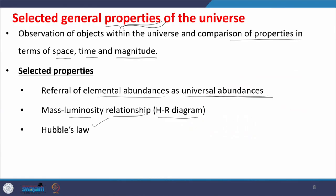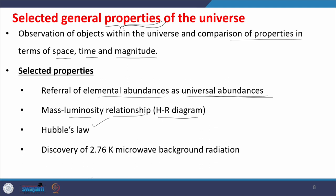Hubble's law is another important selected general property of the universe. And last but not the least, the observation of 2.7 Kelvin remnant photons because of cosmic background radiation — this is something like a capstone for the hypothesis of the Big Bang. In the next lecture I am going to discuss each of these properties: the elemental abundance curve, the H-R diagram, Hubble's law, and the 2.7 Kelvin photon remnant, which has given thorough proof for the Big Bang hypothesis and the age of the universe.